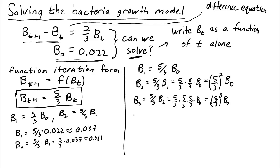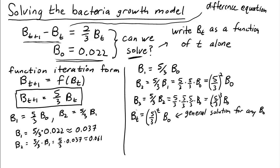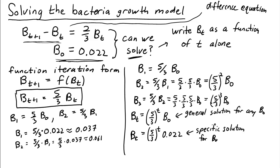Now you can see the pattern. We could continue this for any value of t. To get from time 0 to time t, we take b_0 and multiply by five-thirds, t times. So b_t = (five-thirds)^t times b_0. This is our general solution for any initial condition. With our specific initial condition b_0 = 0.022, we can write the specific solution: b_t = (five-thirds)^t times 0.022.